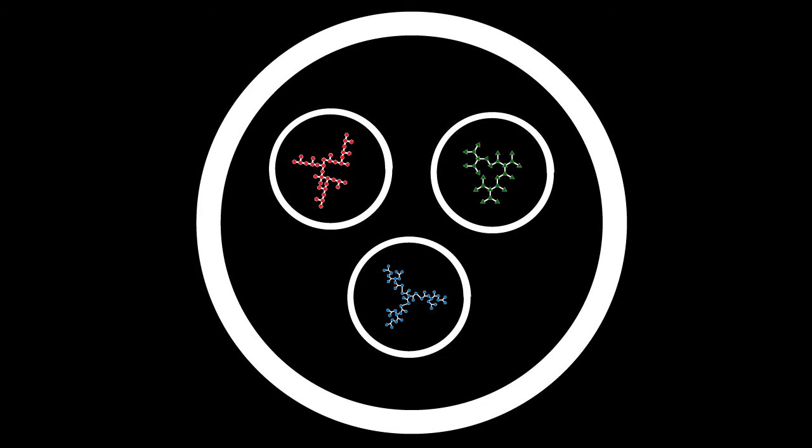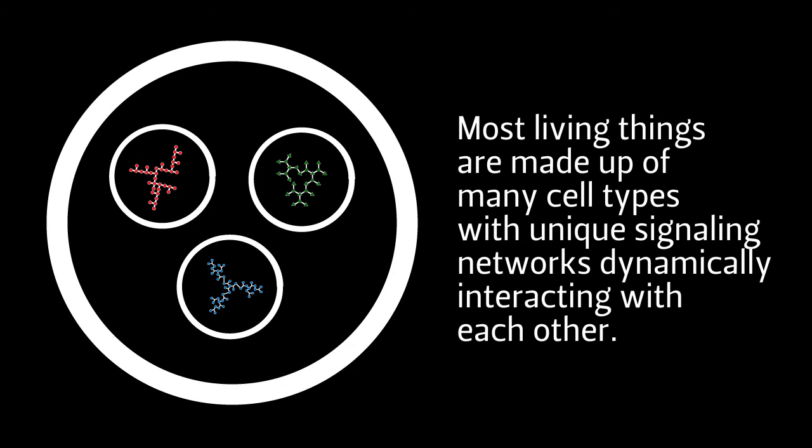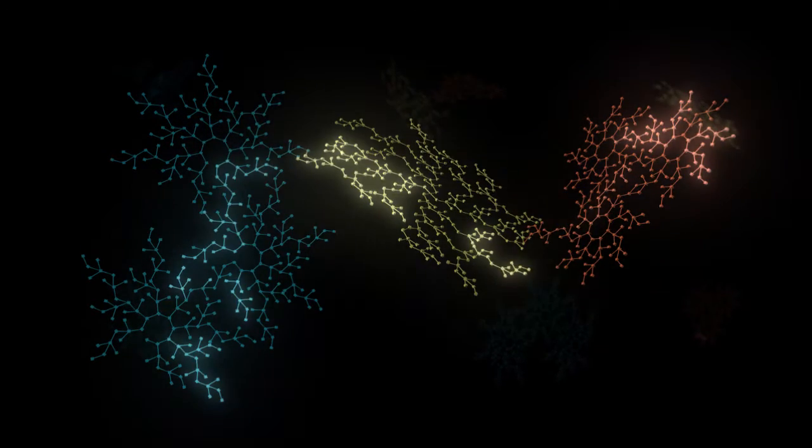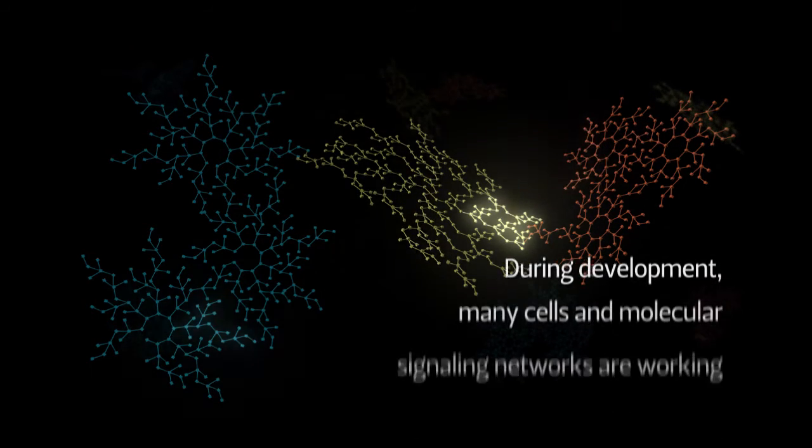Of course, most living things are made up of many cell types. These cells and their unique networks dynamically interact with each other to perform functions necessary for life. During development, many cells and molecular signaling networks are working together to create all of the tissues and organs of the body.